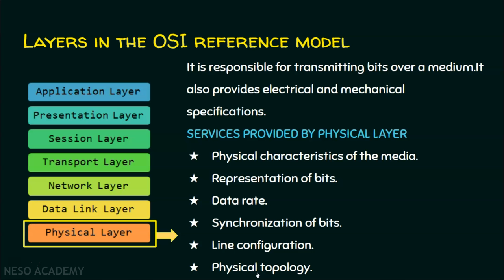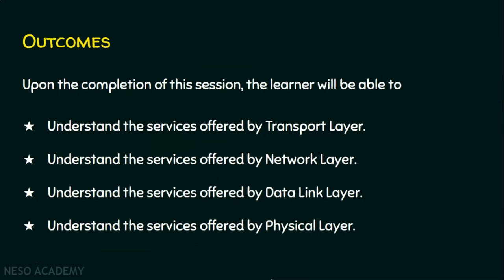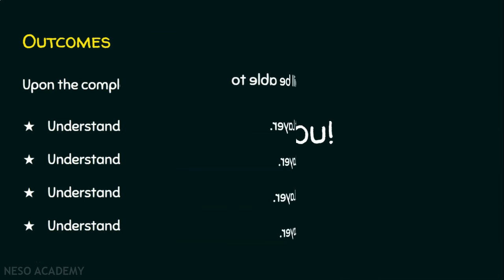One more service offered by the physical layer is transmission mode. There are three kinds: simplex means data flows only in one direction; half duplex means data flows in both directions but not at the same time; full duplex means two devices can send and receive simultaneously. So the services offered by the physical layer are physical characteristics of the media, representation of bits, data rate, synchronization of bits, line configuration, physical topology, and transmission mode. Thank you for watching.